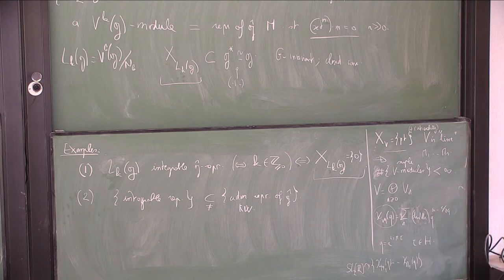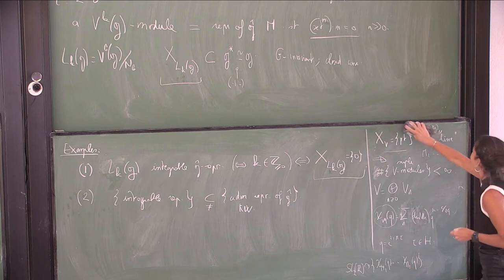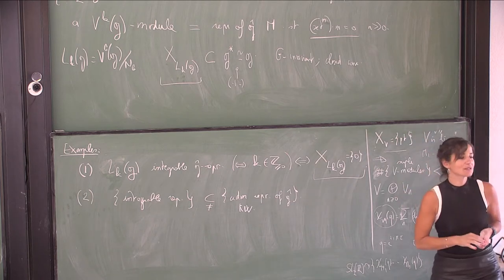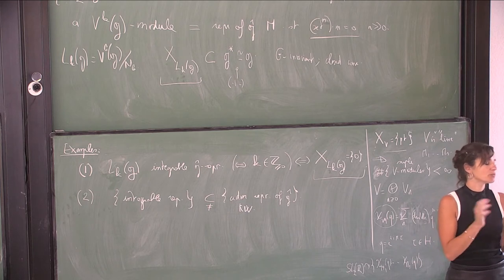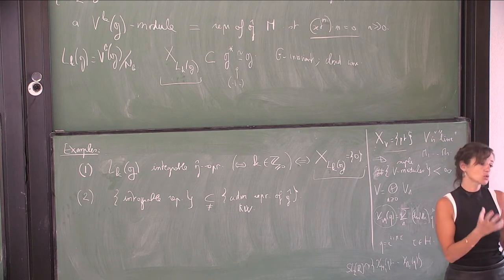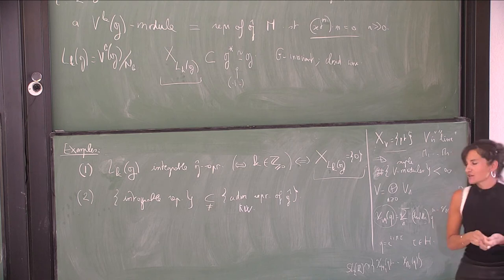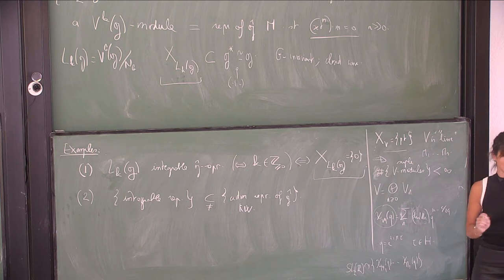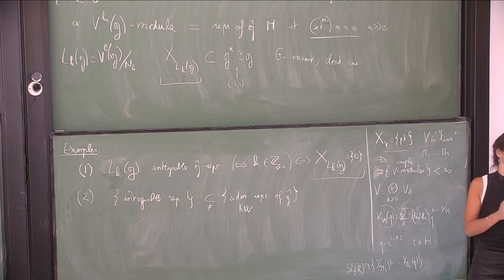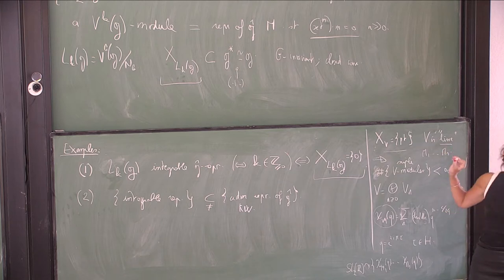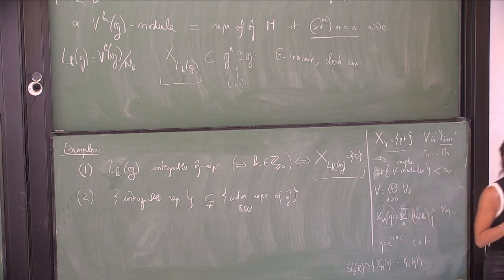What is rationality? Rational means that any positively graded module is completely reducible. The term 'rational' comes from the fact that in this case the central charge is a rational number — it is not the variety that is rational. This is very confusing, and 'lisse' is also confusing in French because the variety is not smooth.